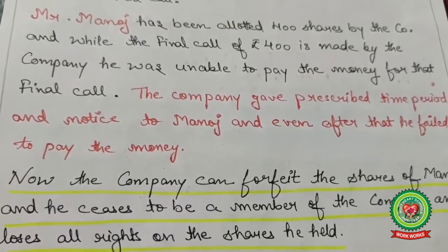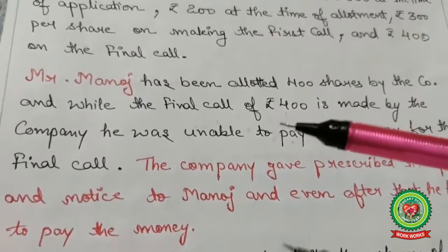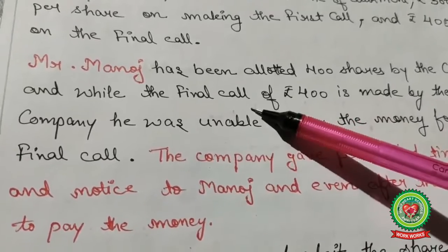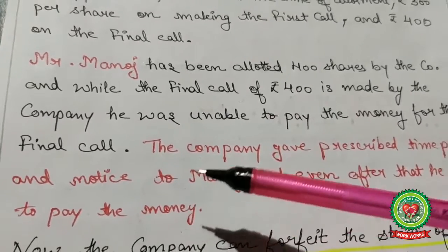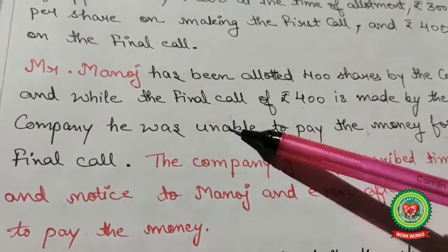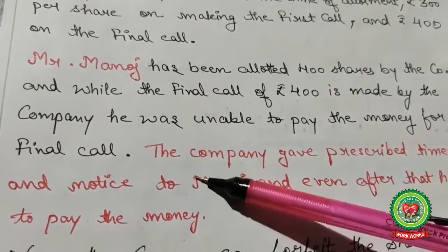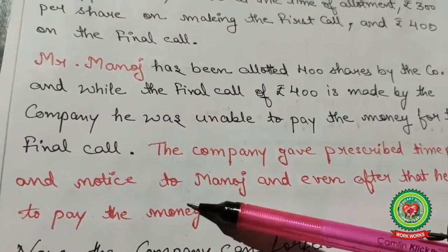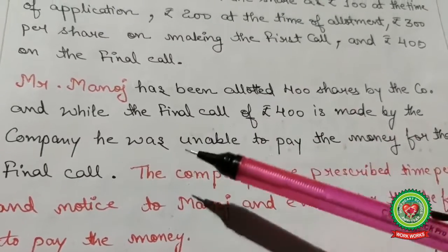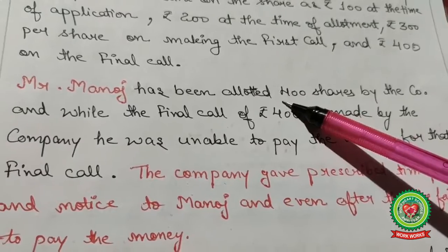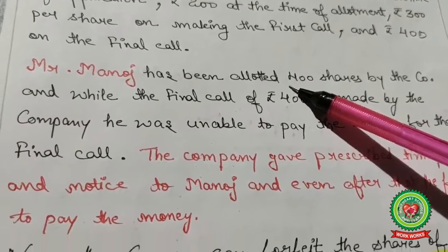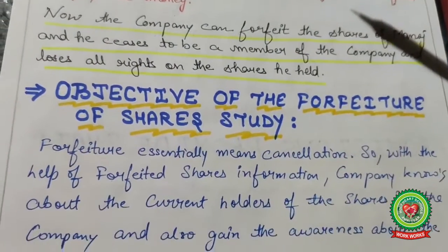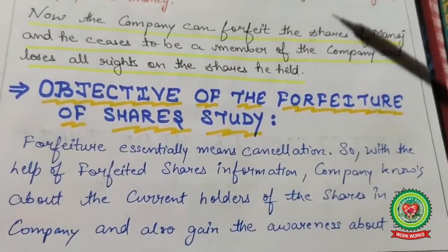The company can now forfeit the shares of Manoj. He ceases to be a member of the company and loses all rights on the shares he held. The company gave notices to Manoj, but after that the person failed to pay, so the company forfeited Manoj's 400 shares.